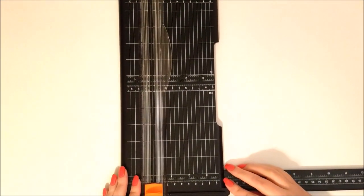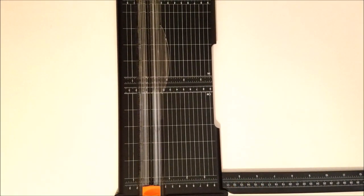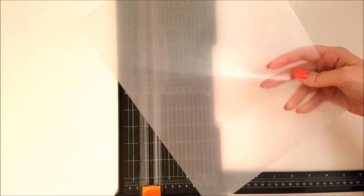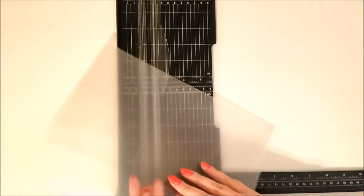Now I'm going to cut the report covers in half and I'm just using my Fiskars paper trimmer for this, but you can use scissors or if you have another type of trimmer.